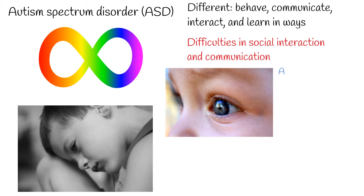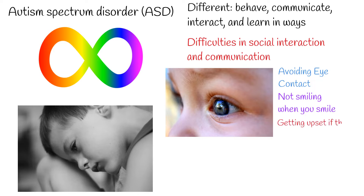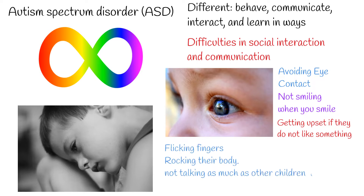Signs of autism spectrum disorders in young kids can include: not responding to their name and avoiding eye contact, not smiling when you smile at them, getting very upset if they do not like a certain taste, smell, or sound, repetitive movements such as flapping their hands, flicking their fingers, or rocking their body, and not talking as much as other children and repeating the same phrases.